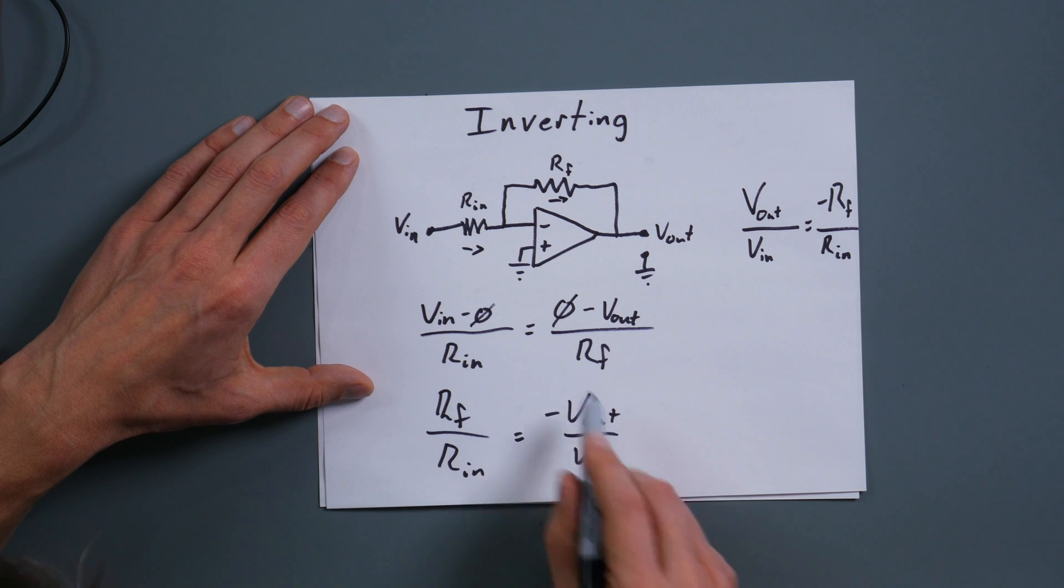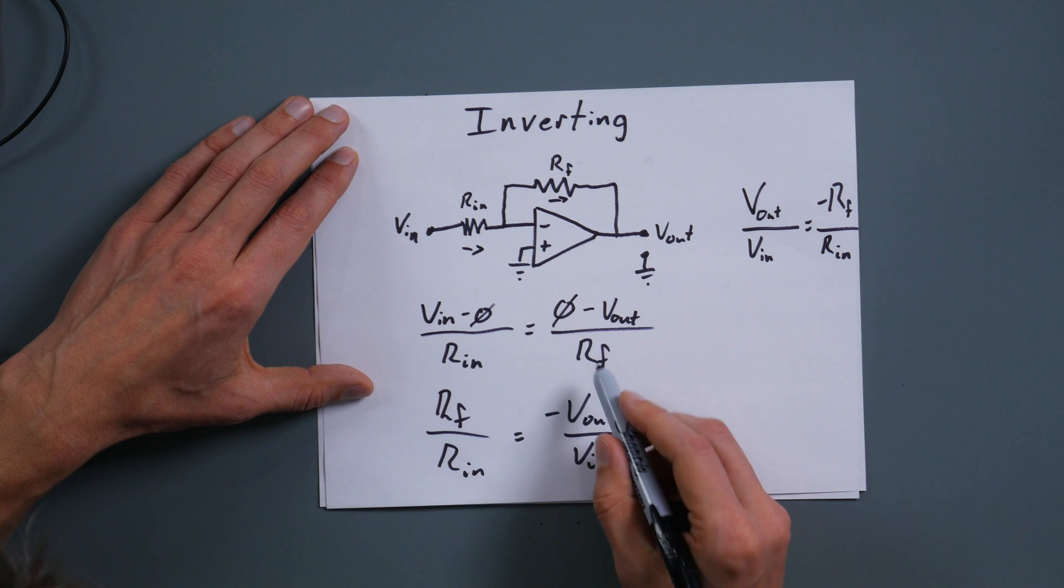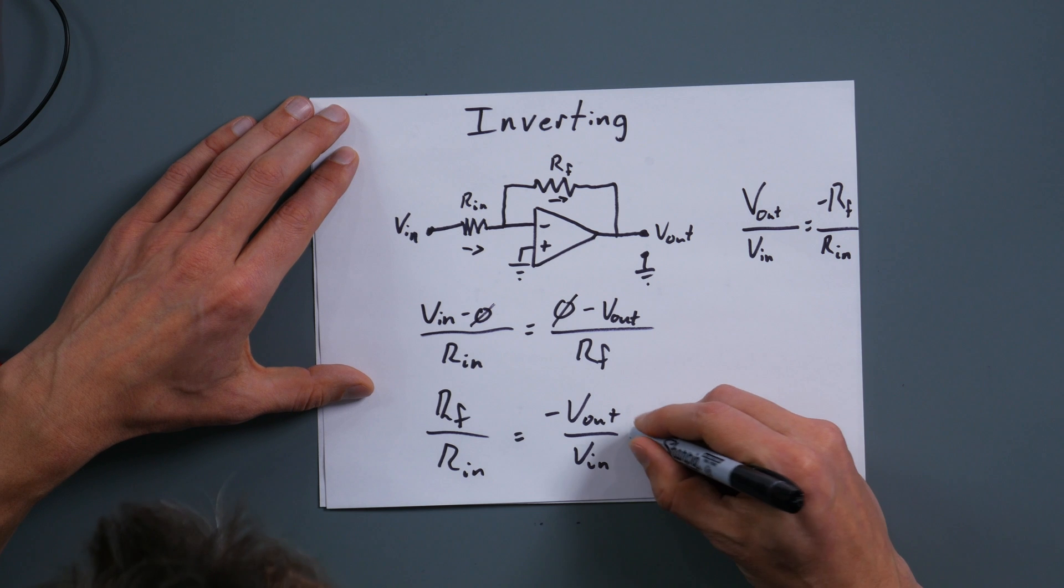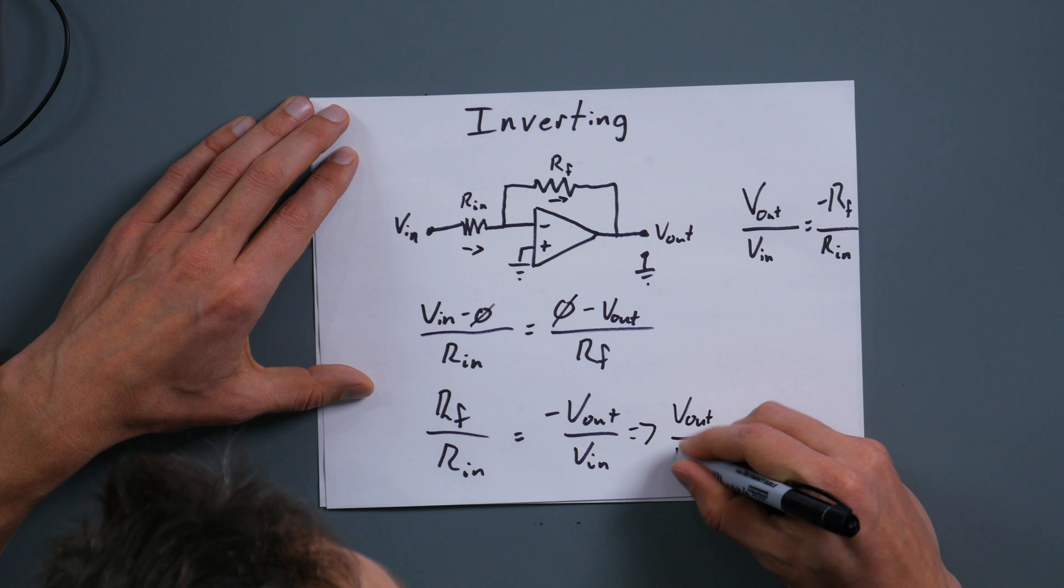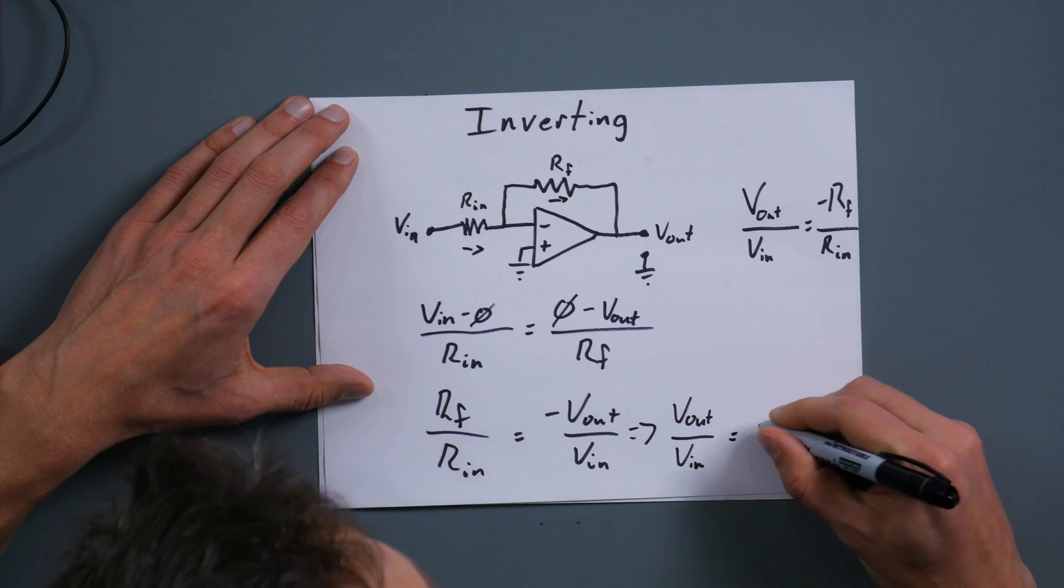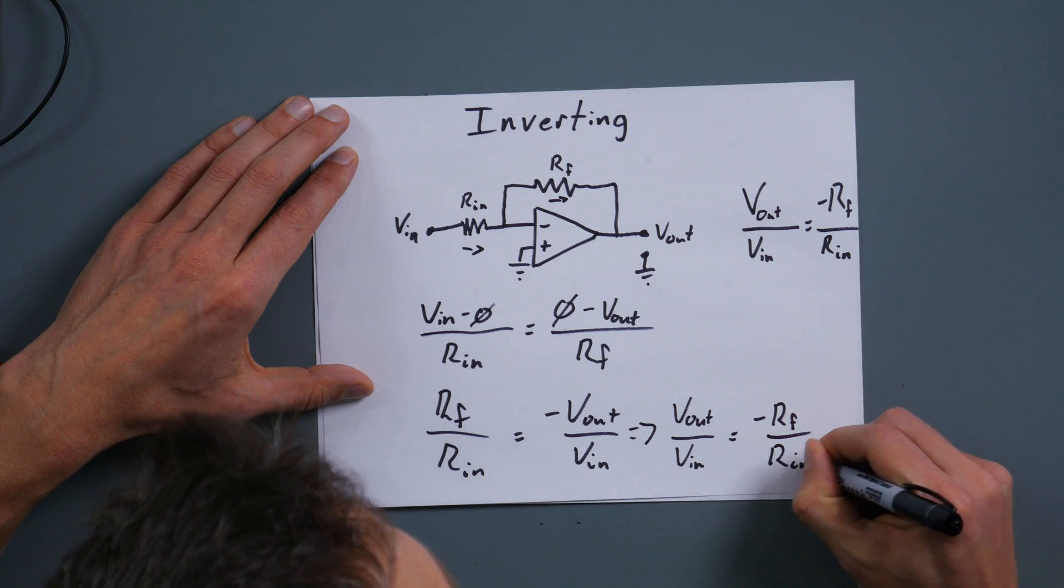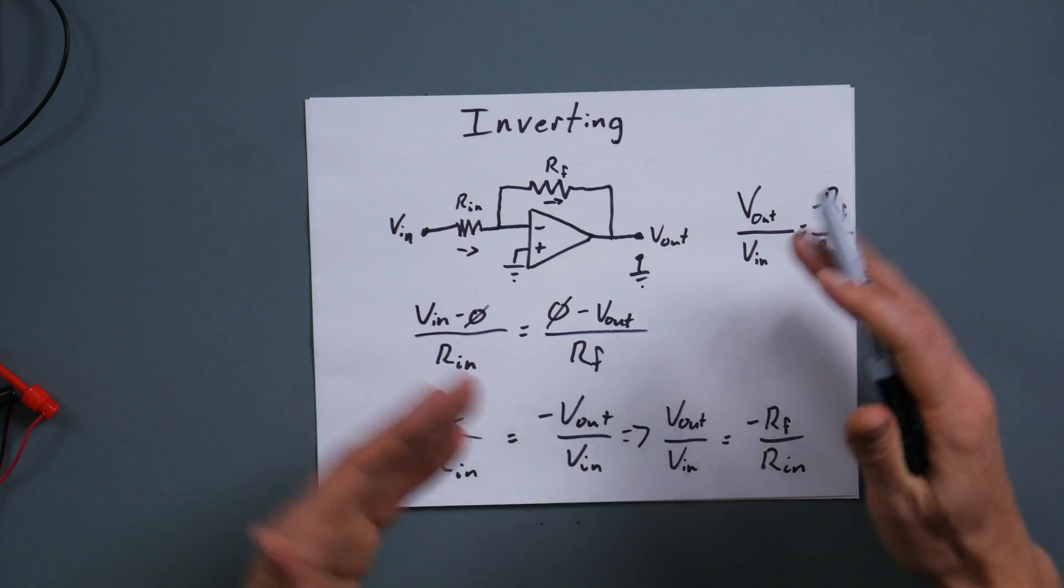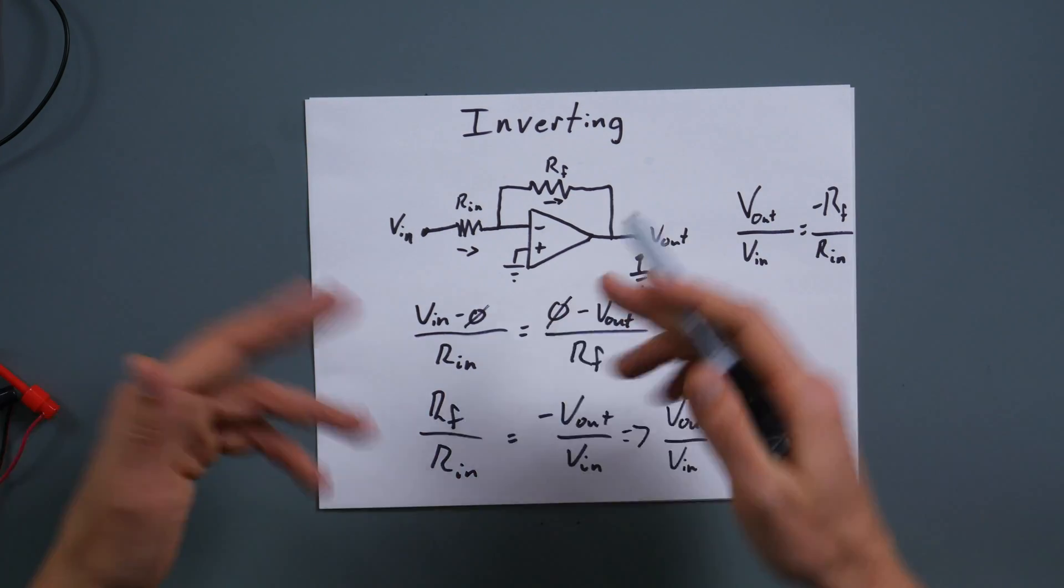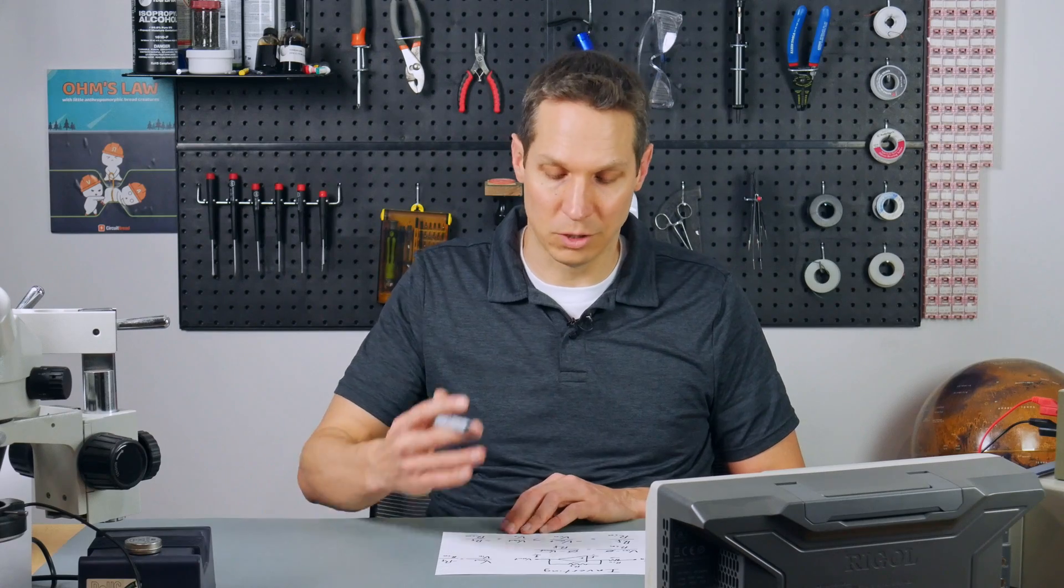So we're already very straightforward, we can get rid of those zeros because they're not needed. Don't get rid of that negative because that is needed. And now all we have to do is put it into the V out over V in format. So let's take RF and multiply it on both sides, and then take V in and divide it on both sides. So we put RF up there, RF over RN equals negative V out over V in. And then we just multiply that by negative to get that negative on the other side. So that just gives us V out over V in equals negative RF over RN.